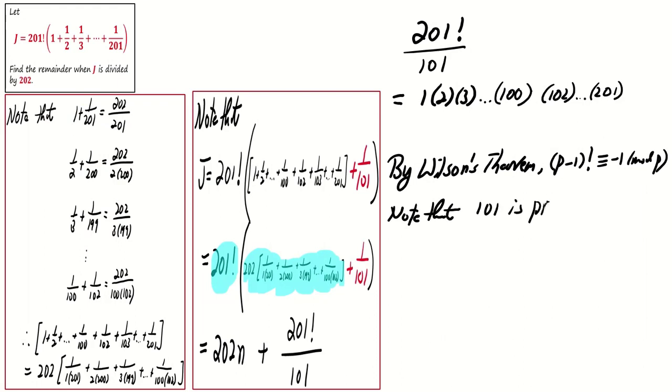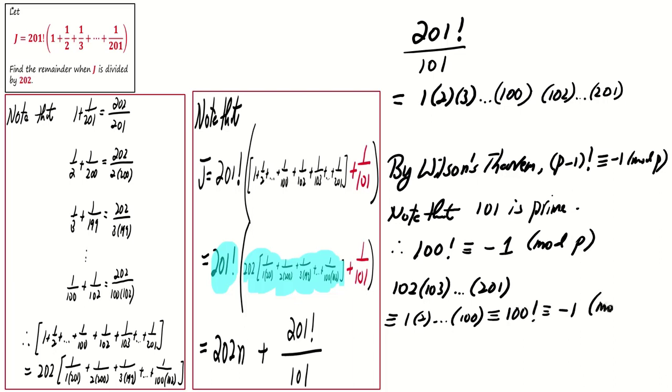Let's continue. Since 101 is a prime number by Wilson's theorem, 100 factorial is congruent to negative 1 mod 101. Now, the product of the integers from 102 to 201 is equivalent to the product of the integers from 1 to 100, which is essentially 100 factorial. Hence, it is also congruent to negative 1 mod 101.